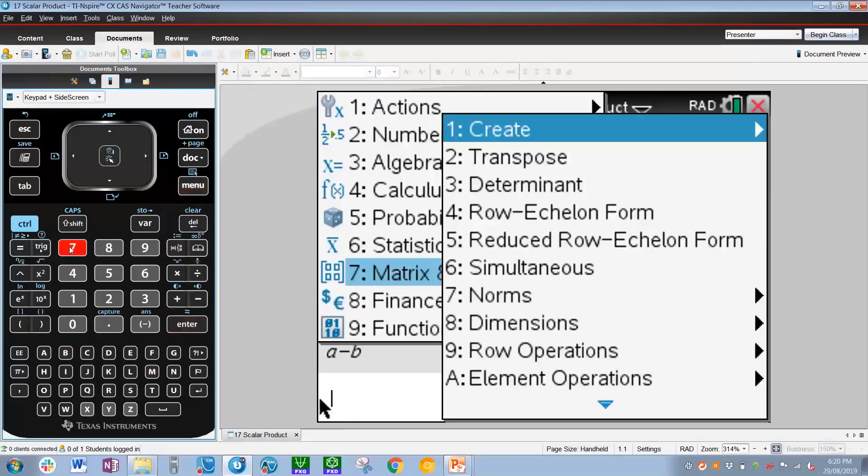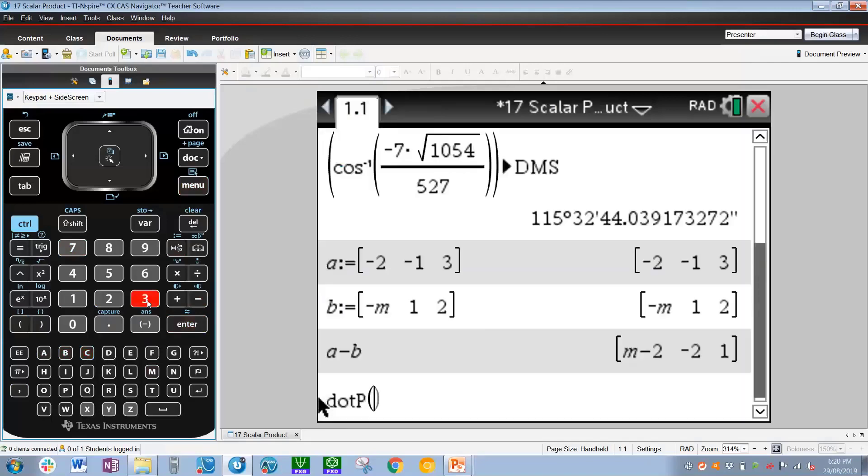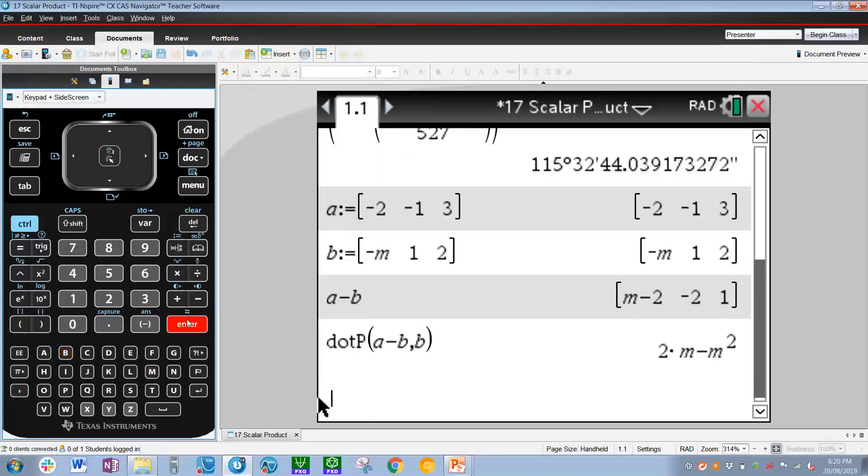So going back to the dot product, menu 7 for matrix and vector, c for vector, and then 3 for dot product. So the two vectors we want to dot product are a-b, and the other vector is simply b. Press enter. And there we go. 2m-m² is the dot product of those two vectors.